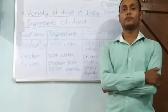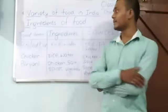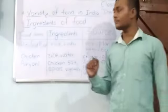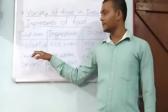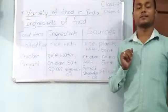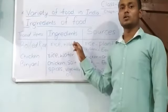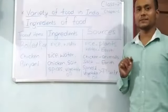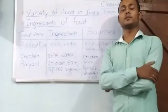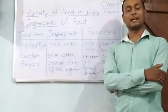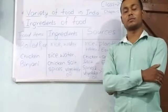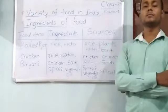Let us understand with the help of a table. This table indicates some food items, their ingredients, and their sources. The first food item we take is boiled rice. The ingredients of boiled rice are rice and water. The source of rice is plants, and the source of water is the earth — meaning water comes from the earth and rice comes from plants.